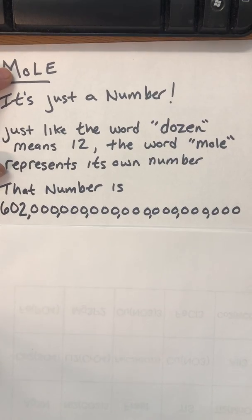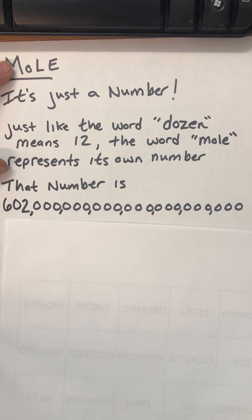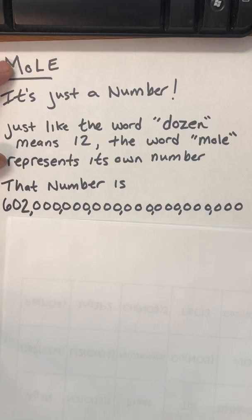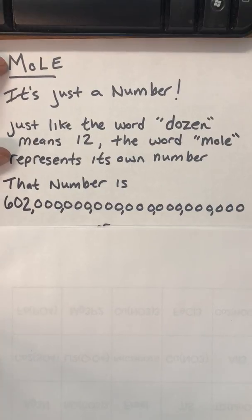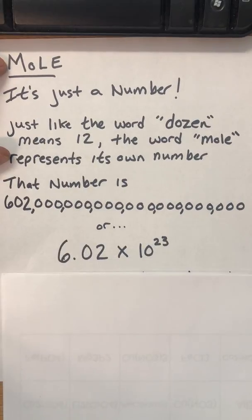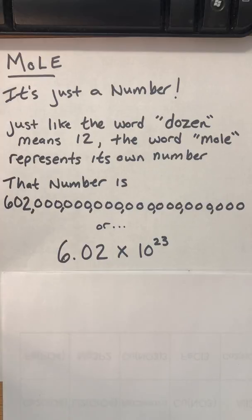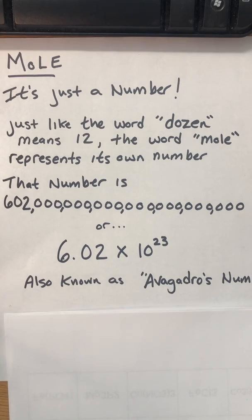That number is this 602 with 21 zeros tacked onto it. That's a huge, huge number. We always simplify that down with scientific notation to this 6.02 times 10 to the 23rd. You need to commit that to memory or have it written down. We call that Avogadro's number.